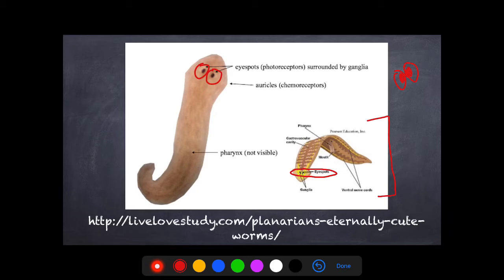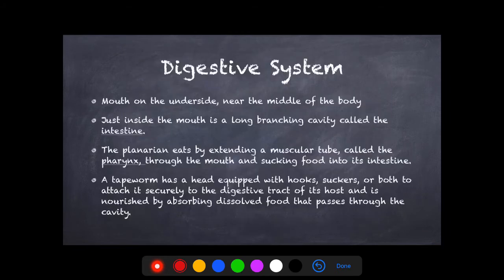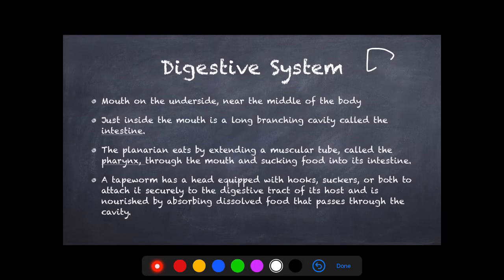You can see the breakdown of the nerves, the mouth, the ganglia — their little brain — and the gastrovascular cavity. Their mouth is on the bottom middle part of their body. Inside the mouth they have a long branching cavity called the intestine that helps digest food. The planarian eats by extending a muscular tube called a pharynx through the mouth and sucking food into its intestine.